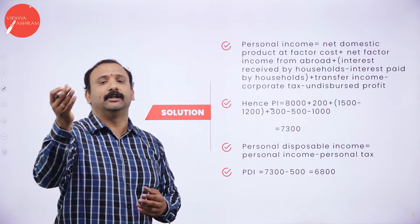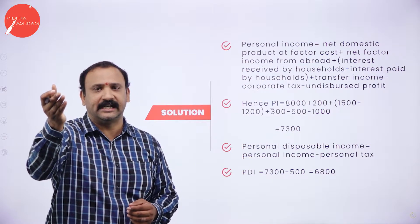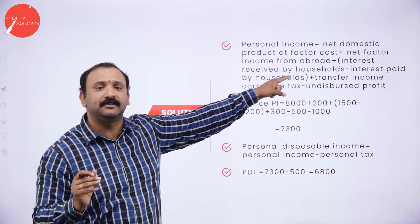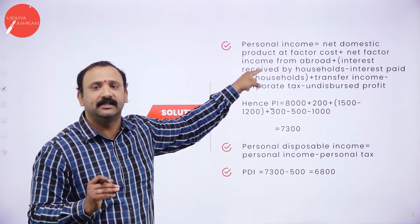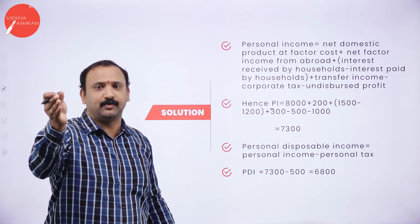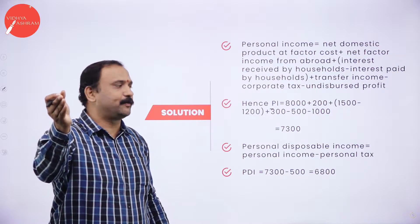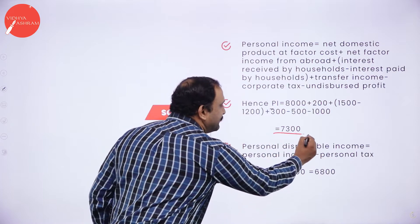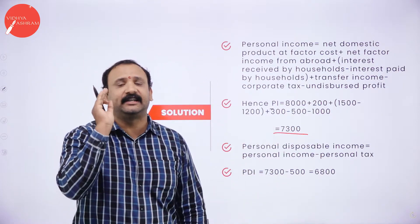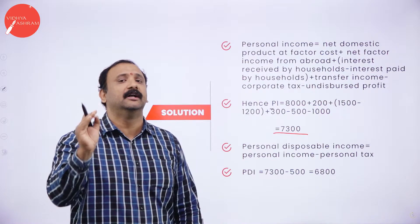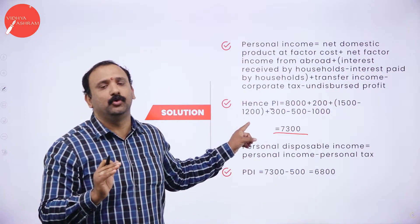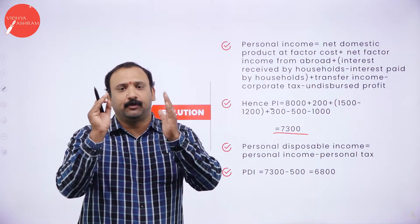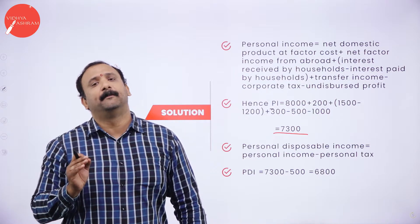All the data required for the formula is already given. The value for net domestic product is 8,000, plus 200 for net factor income from abroad, plus 1,500 minus 1,200 for interest received and paid, plus transfer income of 300, minus corporate tax of 500, minus undisbursed profit of 1,000. So you will get the answer as 7,300. You simply have to fit in the formula and the numbers to arrive at the personal income.